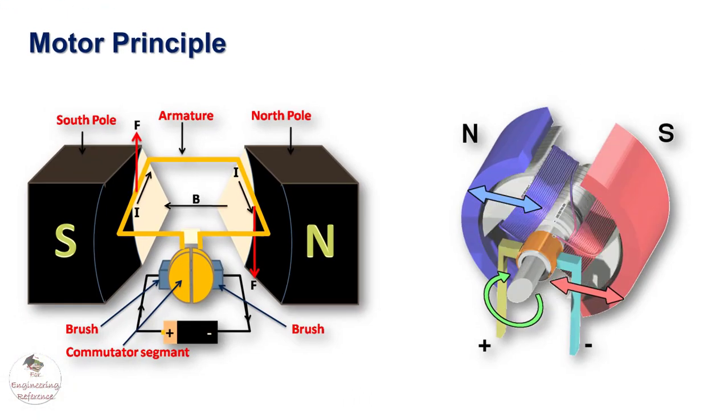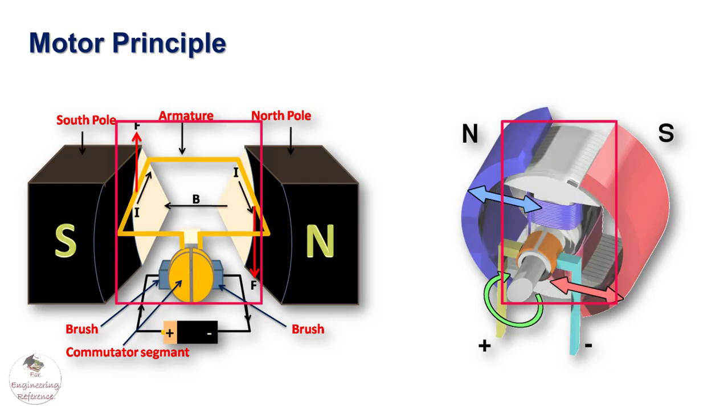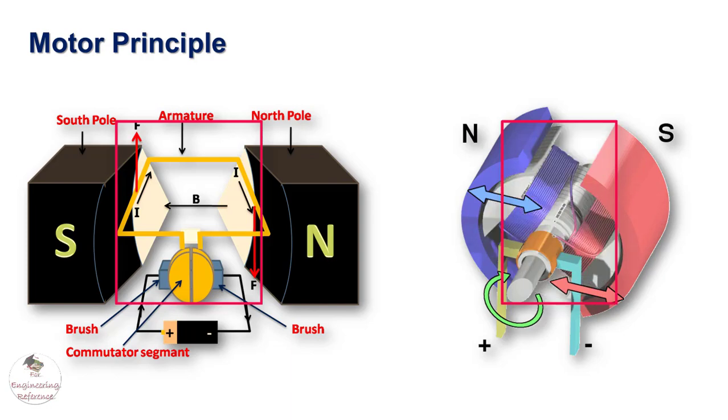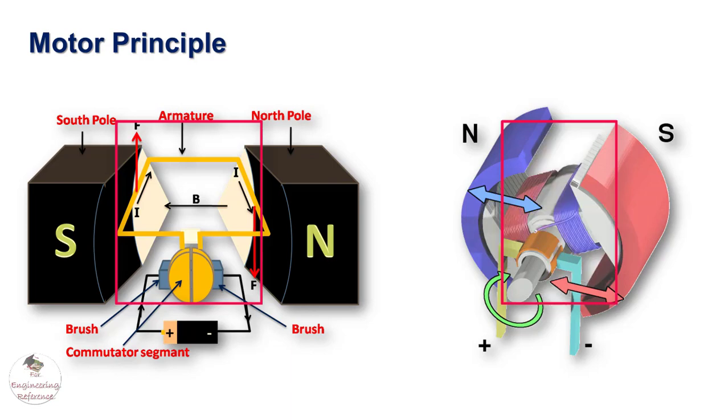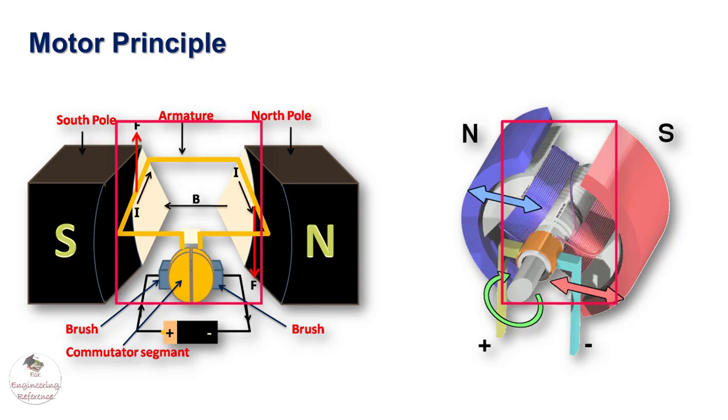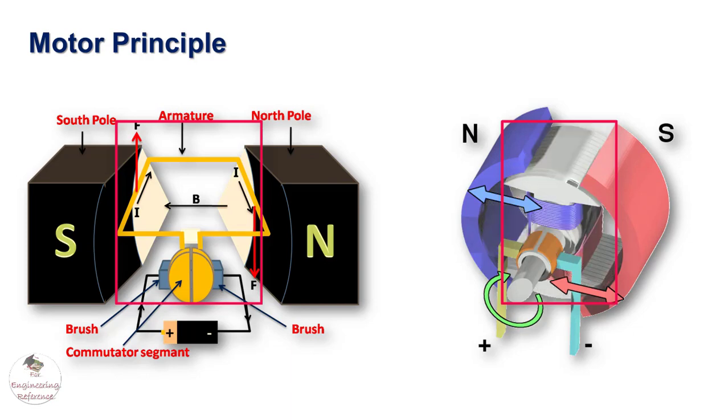An armature is a rectangular coil inside the electric motor. Current passes through the armature. Being in an external magnetic field, it experiences a force, more specifically a torque, and hence rotates. This is responsible for the mechanical motion of the electric motor and due to this, the shaft of the motor rotates.